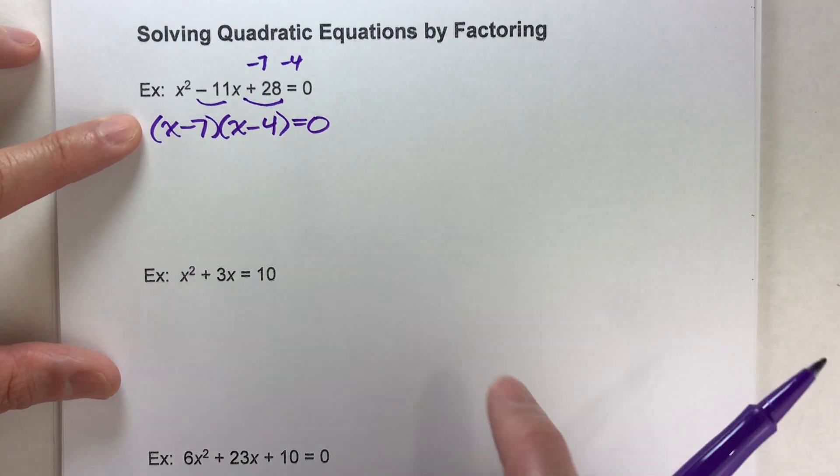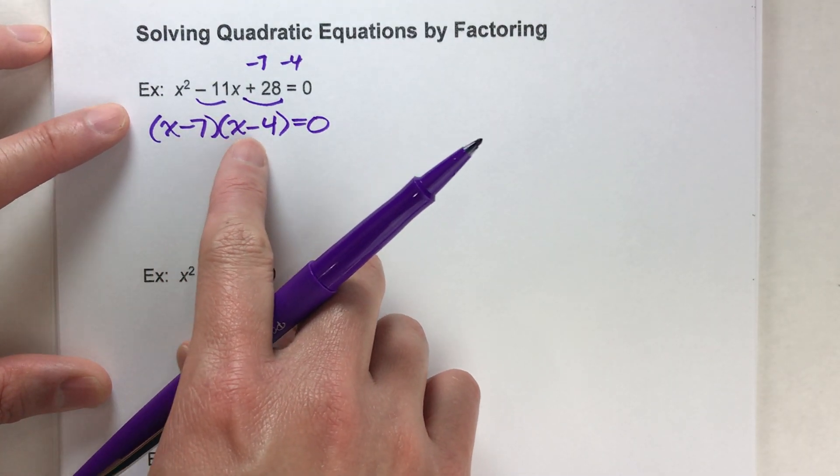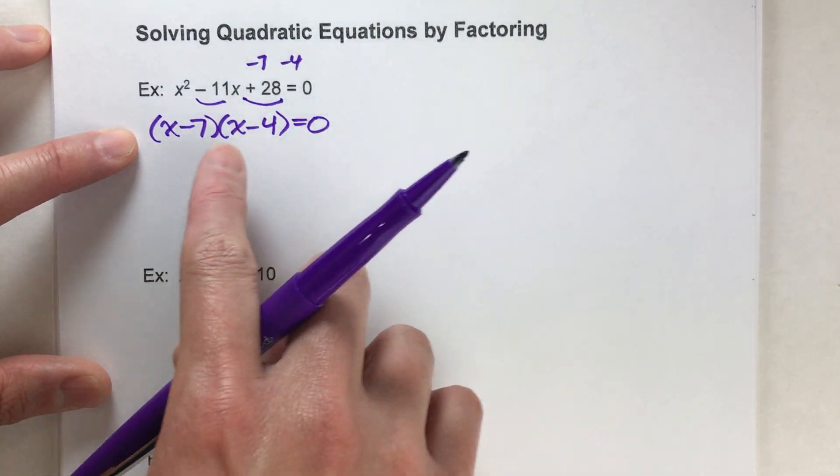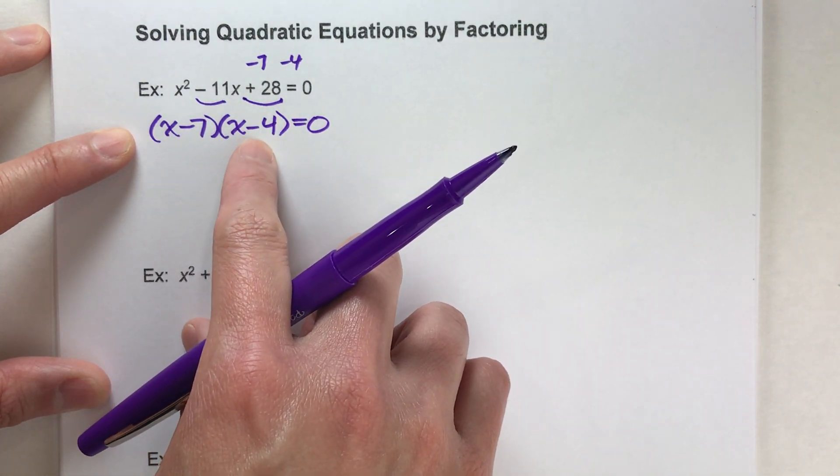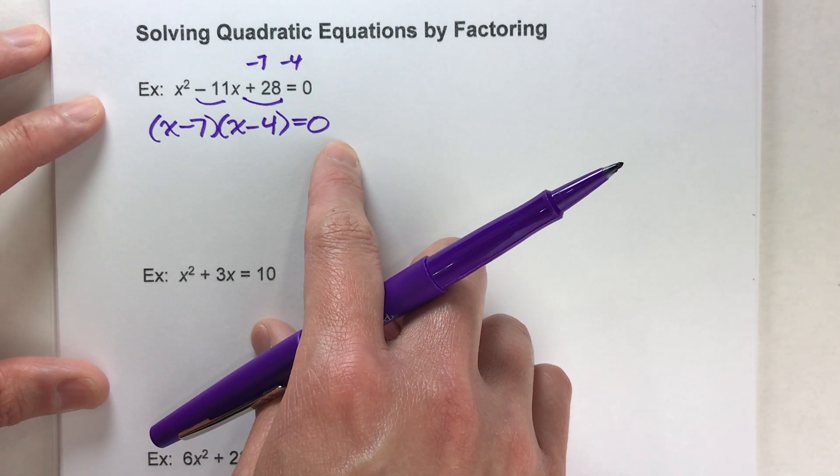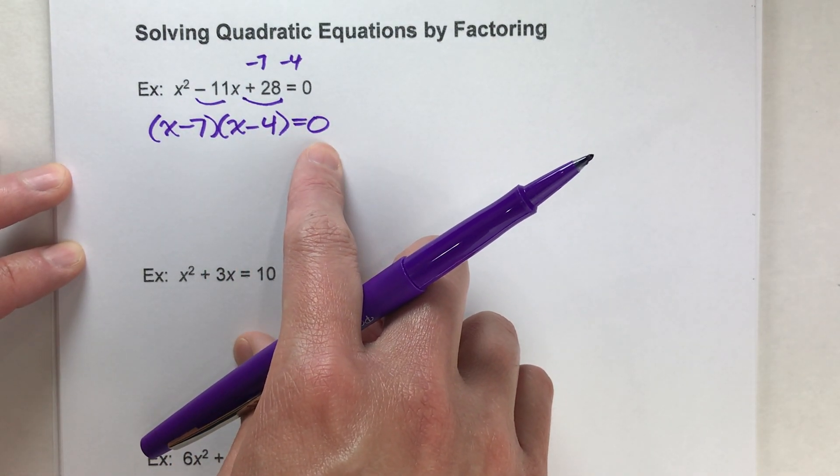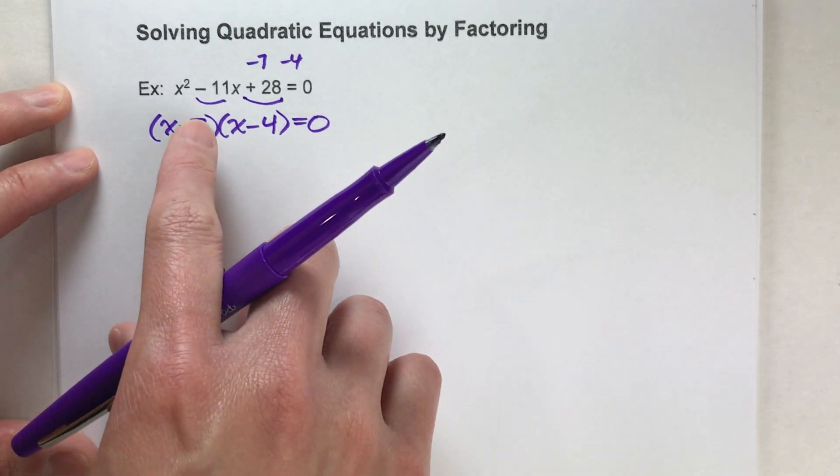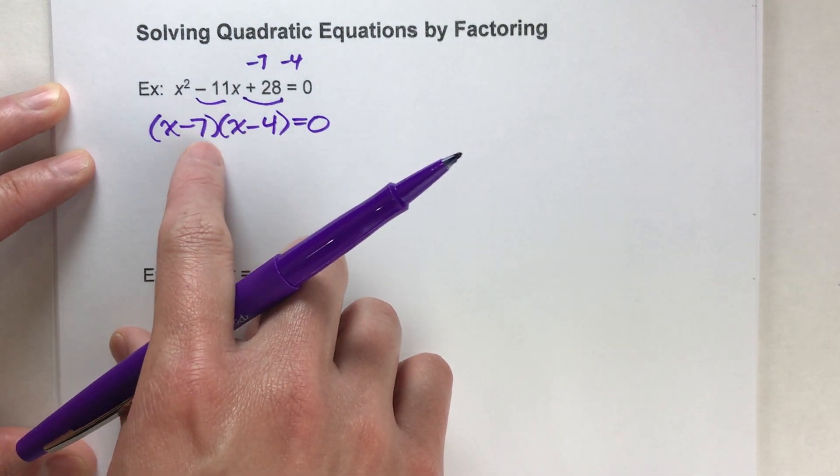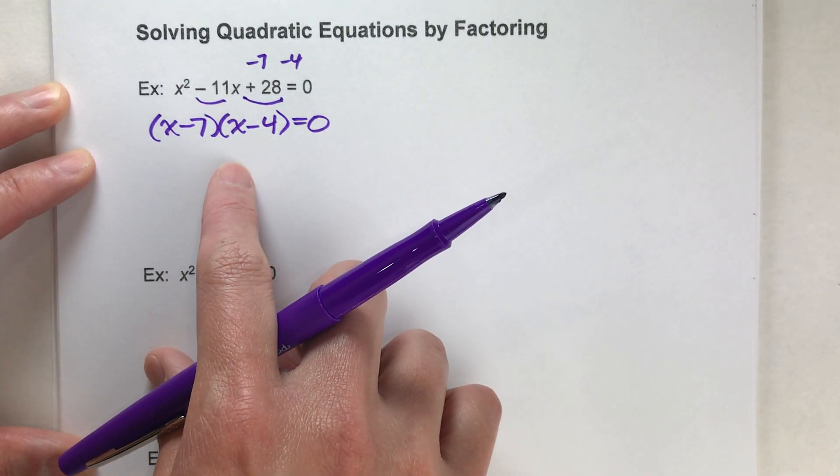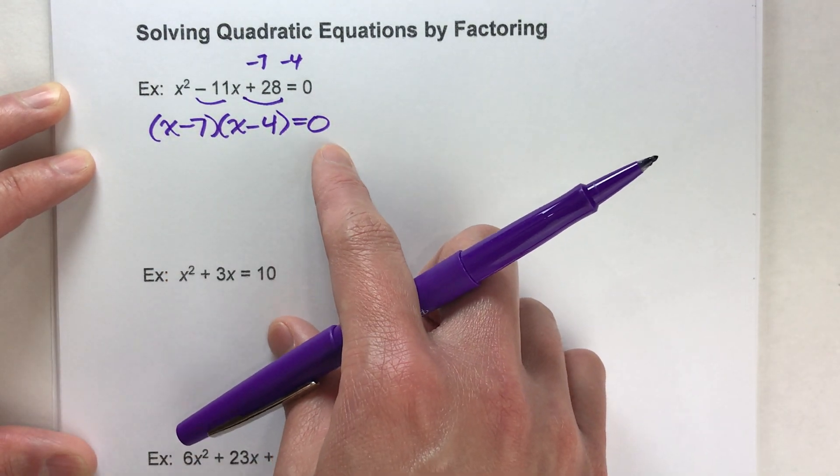Now how does factoring help us solve the equation? Well it's kind of huge because remember what this says. This says that all this stuff in parentheses times all this stuff in parentheses equals zero. So in other words, something times something equals zero. You learned in elementary school that when you're multiplying two things and they equal zero, that means at least one of these has to be zero because zero times something equals zero. And that's the only way you're going to get zero.